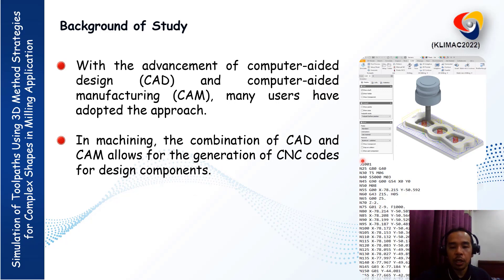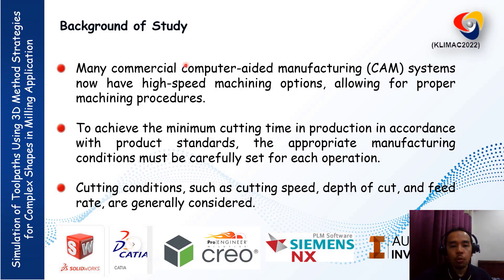As we can see in this slide, this is an example of NC code generated from a CAD/CAM system. Many commercial CAM systems now have high-speed machining options allowing for proper machining procedures. To achieve the minimum cutting time in production in accordance with product standards, the appropriate manufacturing conditions must be carefully set for each operation.